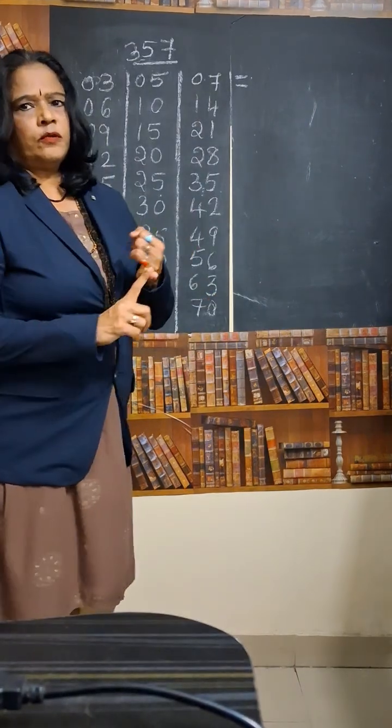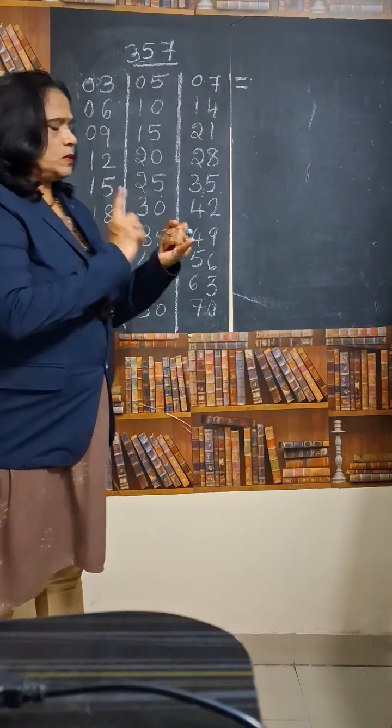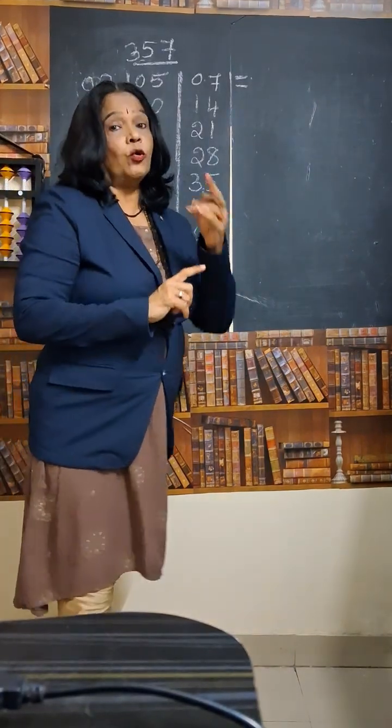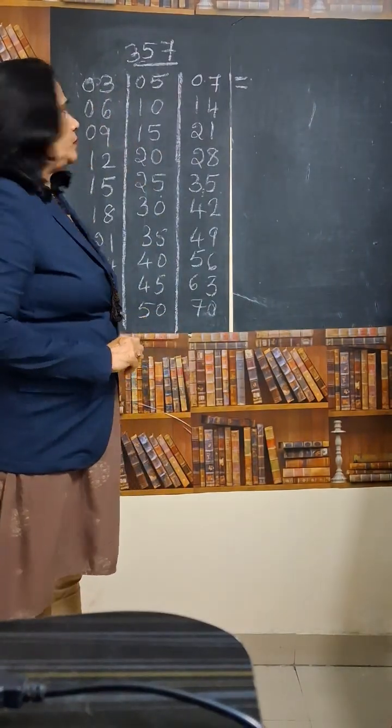So now we wrote the tables of all the 3 numbers. The given number is 357. We wrote the tables of 3, we wrote the tables of 5 and also 7. Now, let us see how to write the multiplication tables of 357.